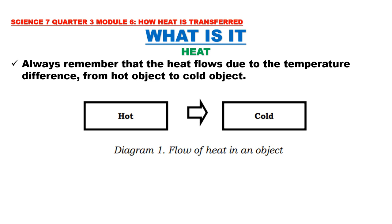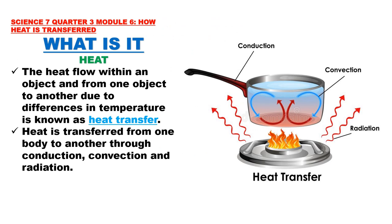Always remember that heat flows due to the temperature difference from hot object to cold object. The heat flow within an object and from one object to another due to differences in temperature is known as heat transfer. Heat is transferred from one body to another through three methods, namely: conduction, convection, and radiation.